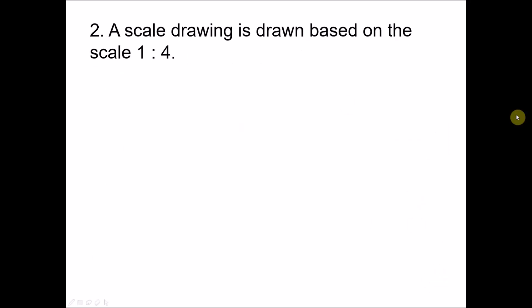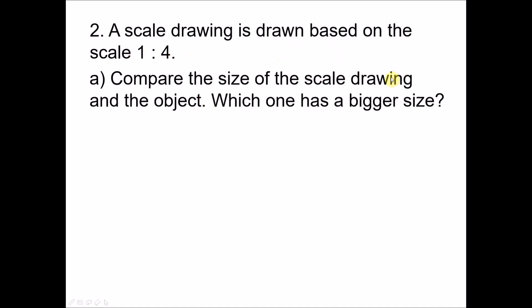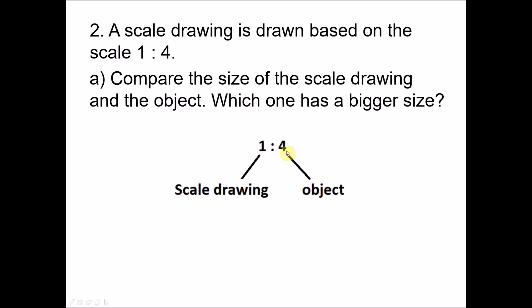Question number two. A scale drawing is drawn based on the scale one to four. Compare the size of the scale drawing and object — which one has a bigger size? Remember: this side represents the scale drawing, this side represents the object. Whichever side has a bigger value means the corresponding object or scale drawing has a bigger size. Four is bigger than one, so the object has a bigger size. The answer is the object.